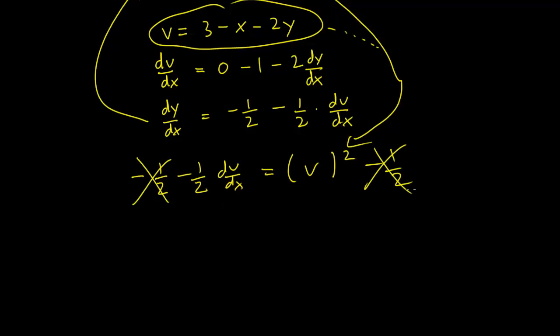We eliminate the minus 1/2 on both sides. And what we have left is dv/dx equals minus 2v².